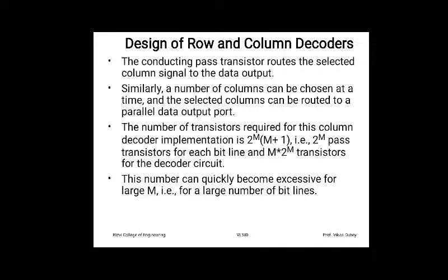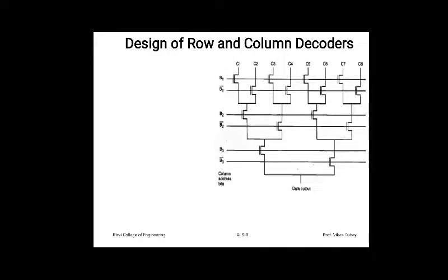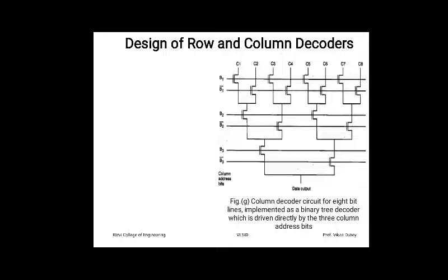This number grows quickly as M increases, which is a disadvantage of this approach. For an 8-bit line example using a 3-to-8 decoder, the straightforward method requires 8 × 3 = 24 transistors for the decoder. The column decoder circuit for 8 bit lines is implemented as a binary tree decoder driven directly by three column address lines.